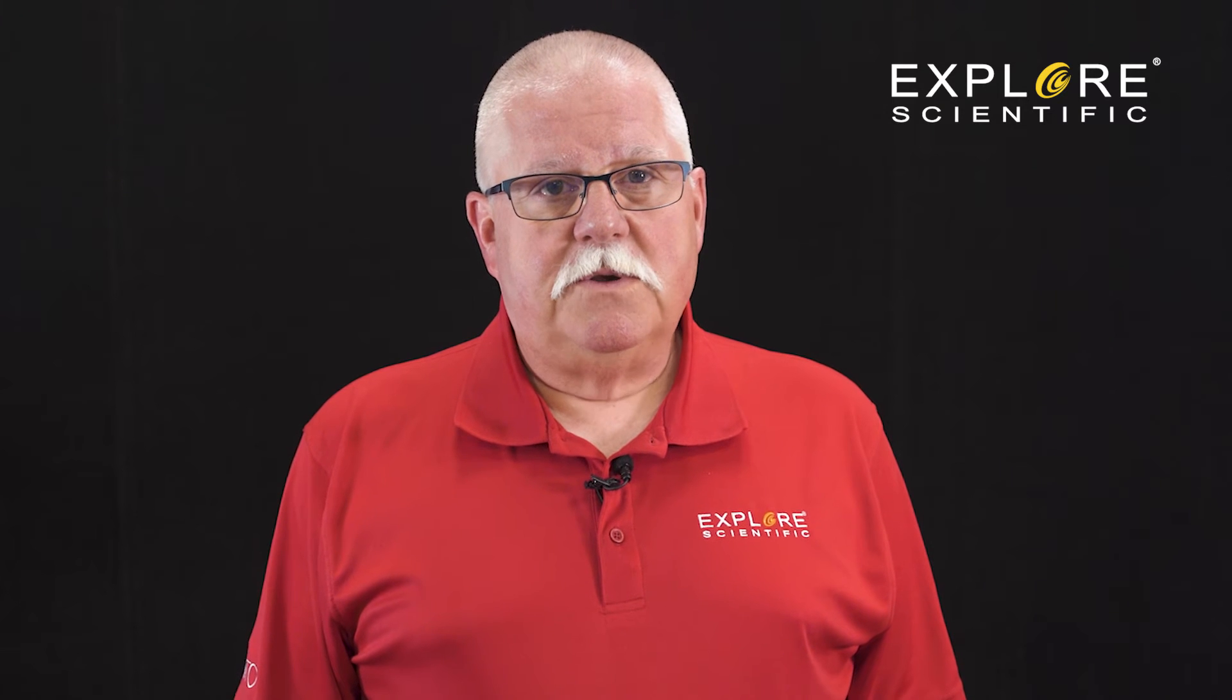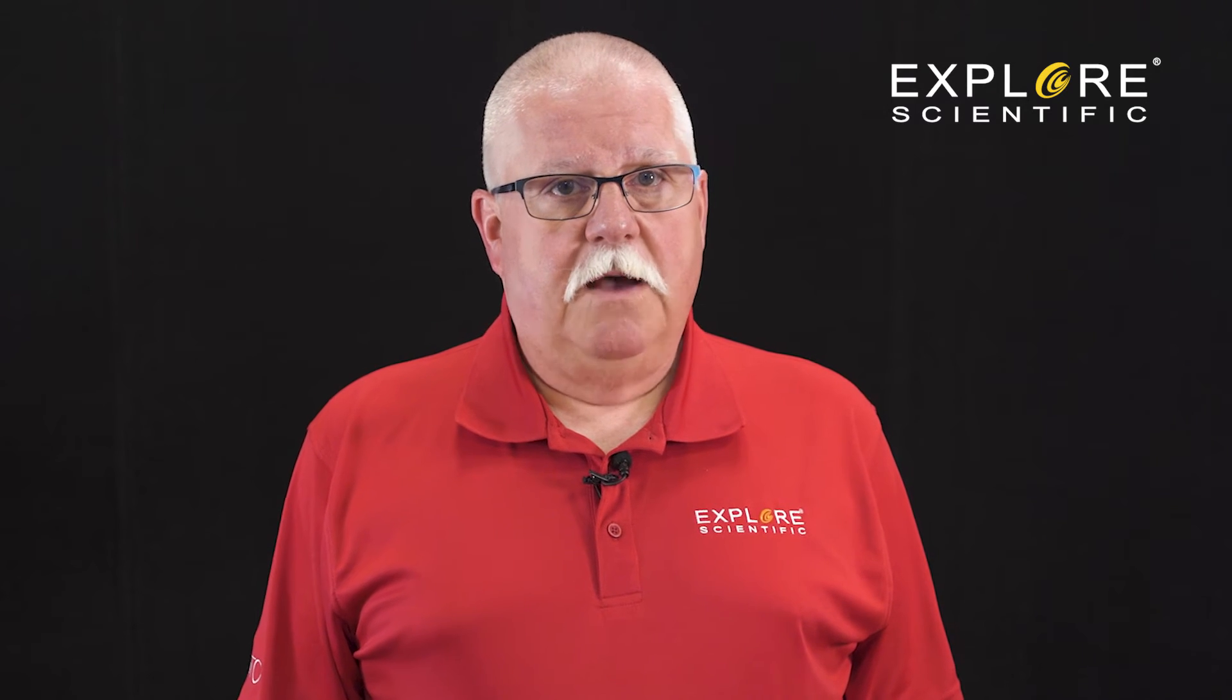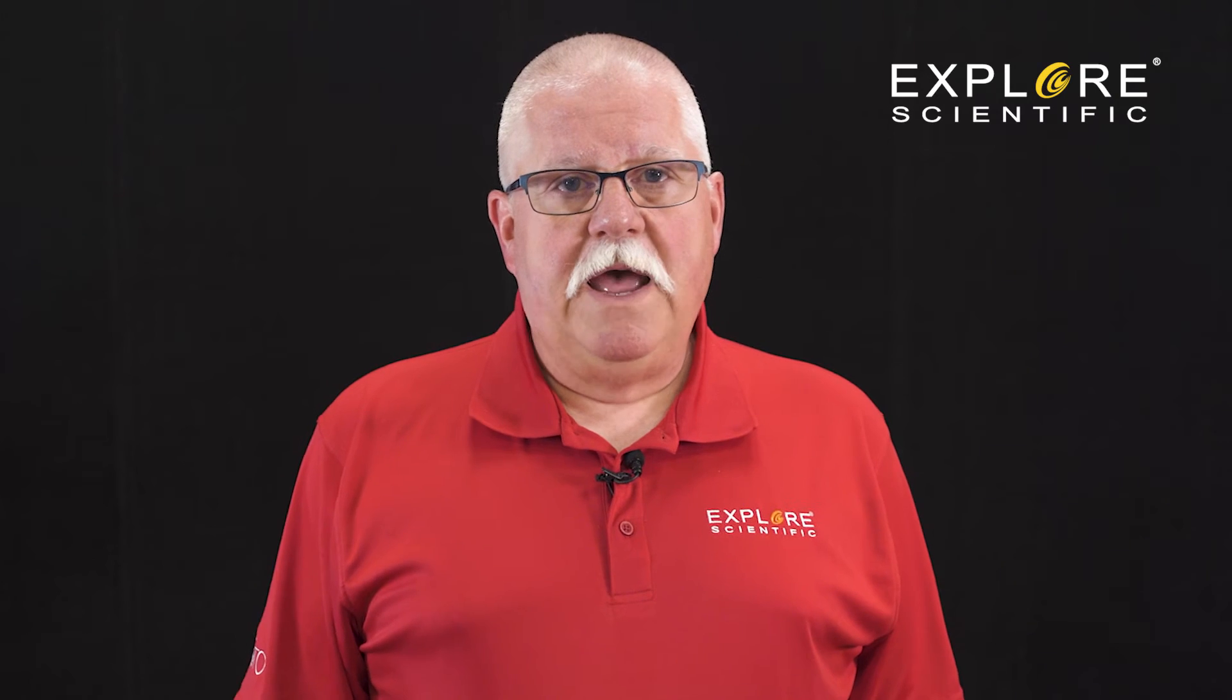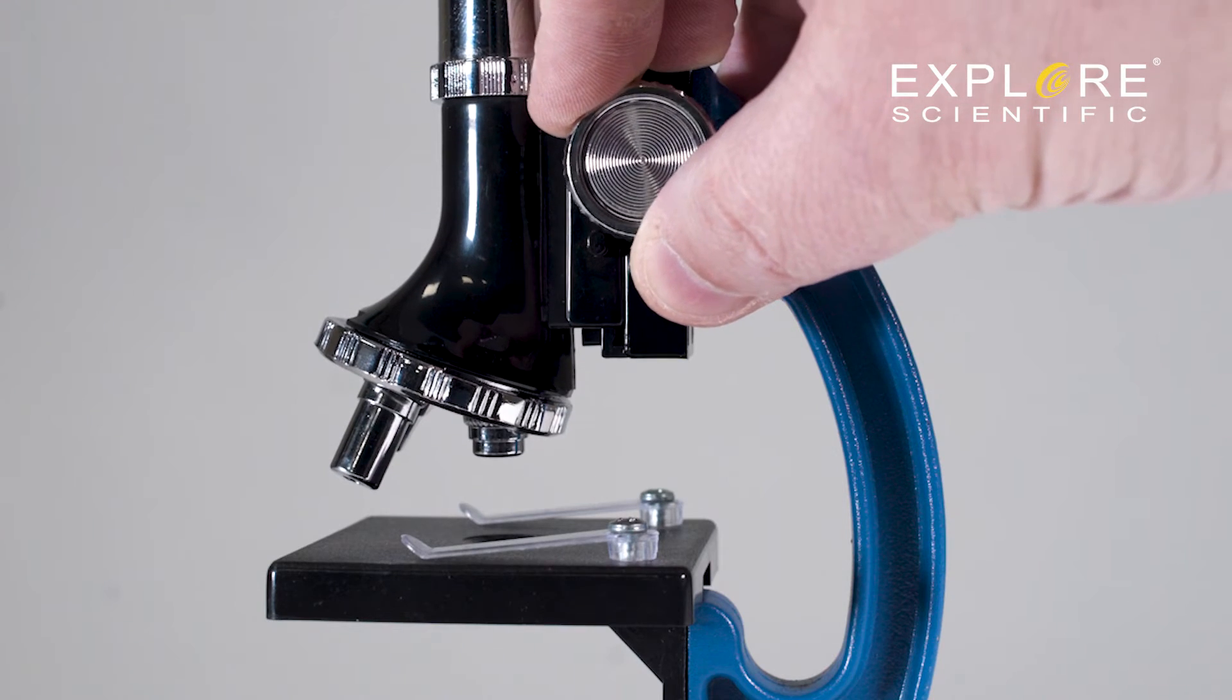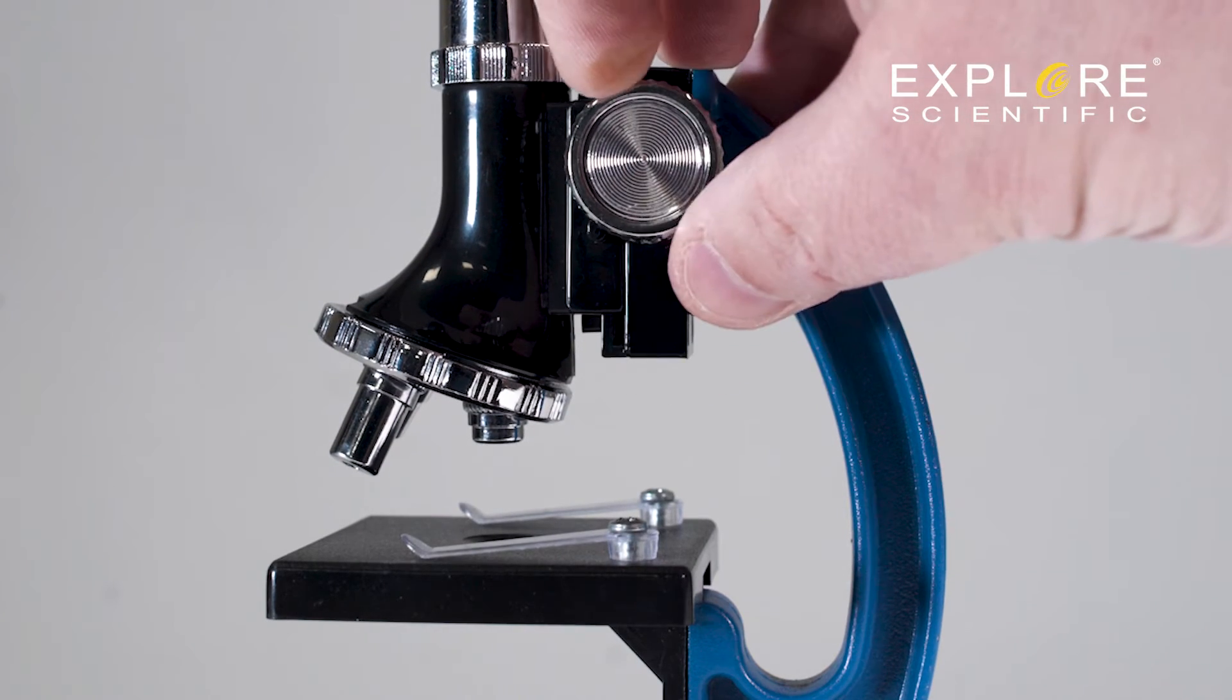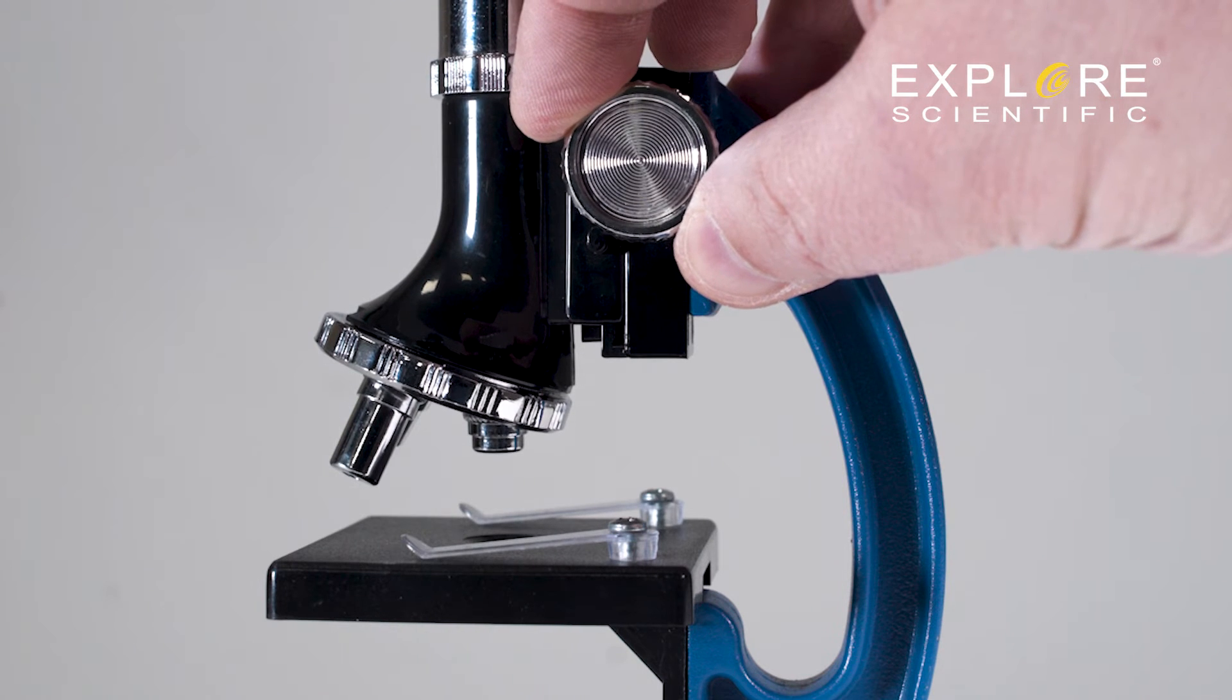Let's practice moving the focuser. Grasp the focusing knobs and rotate them, which makes the eyepiece move up and down. Practice turning the knobs very slowly. This is important because the specimen will be in focus for a very short period of time. It's easy to go right past the focus point and never notice it.